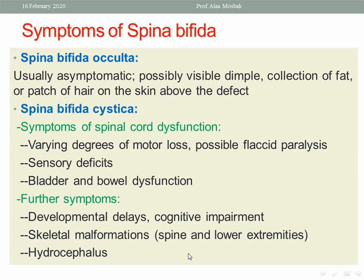The symptoms of spina bifida: usually asymptomatic in cases of spina bifida occulta — just a possible visible dimple, collection of fat, or patch of hair on the skin above the defect. Spina bifida cystica presents with symptoms of spinal cord dysfunction, including varying degrees of motor loss, possible flaccid paralysis, sensory deficits, bladder and bowel dysfunction, and incontinence of urine and stool. Further symptoms include developmental delay, cognitive impairment, skeletal malformations, and hydrocephalus.